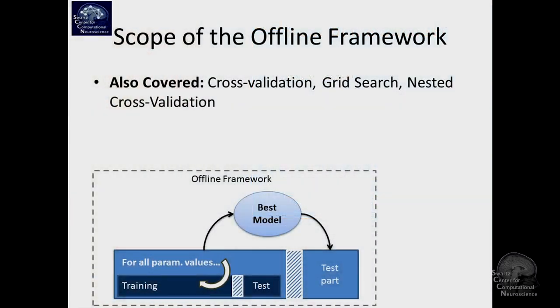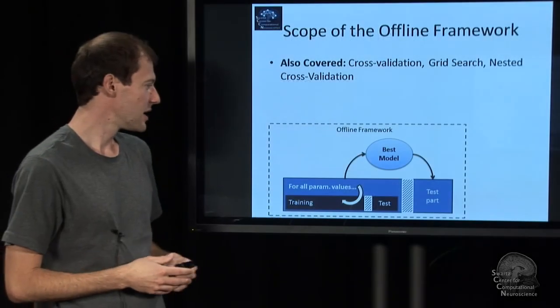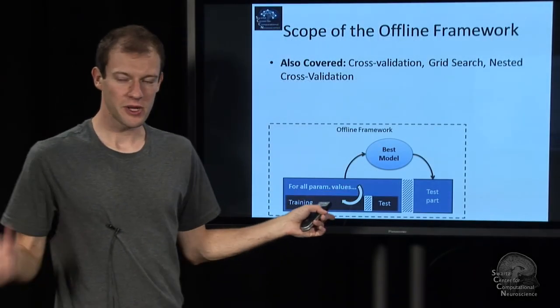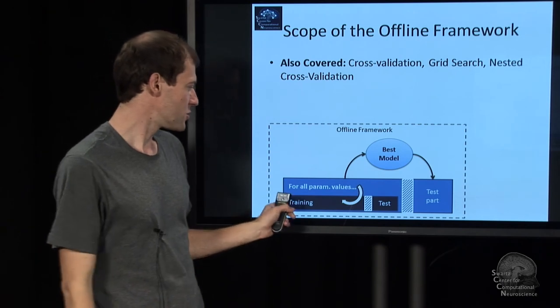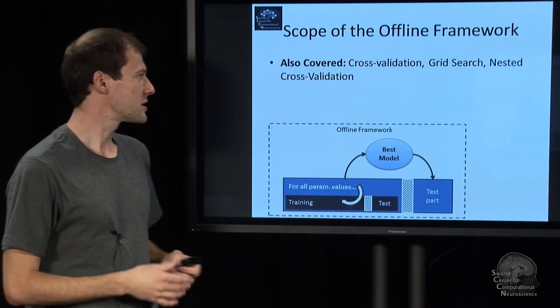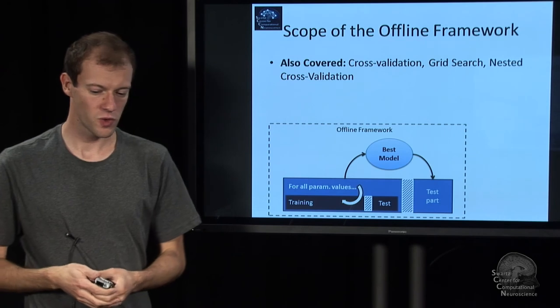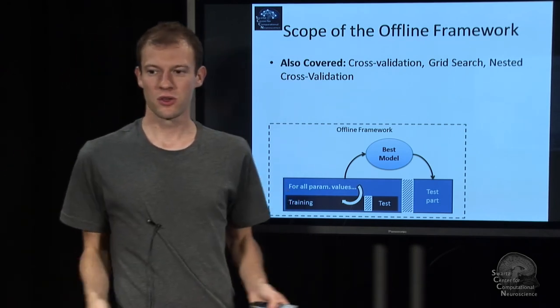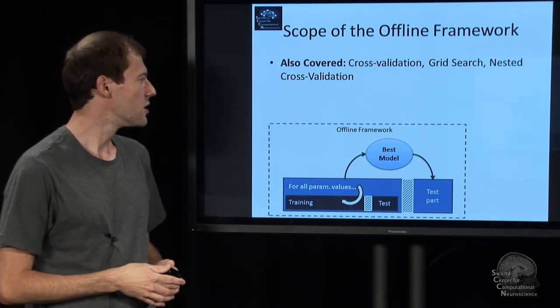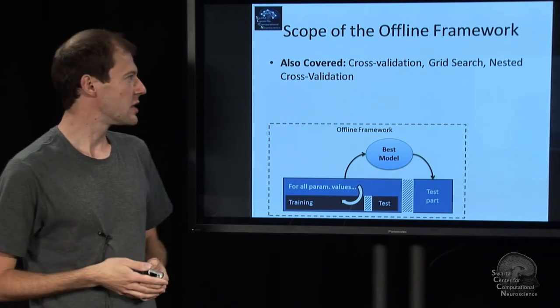And there's another area for the offline framework, and that's evaluation. So you want to not only run this stuff, you also want to quantify how it works. The offline framework also implements things like cross-validation: train your model on some data, test it on some other data, shuffle, and average the results, performance results. It allows you to do parameter search in an automated manner, nested cross-validation and things like that. So that's all pre-implemented, and it usually doesn't require any coding. You just click the button in the GUI or the line in the script.